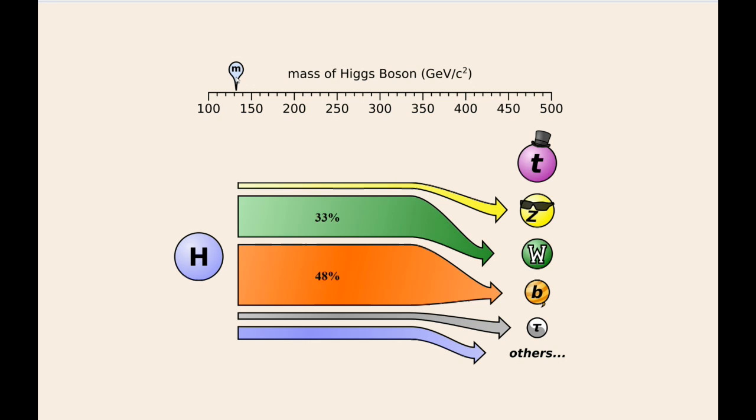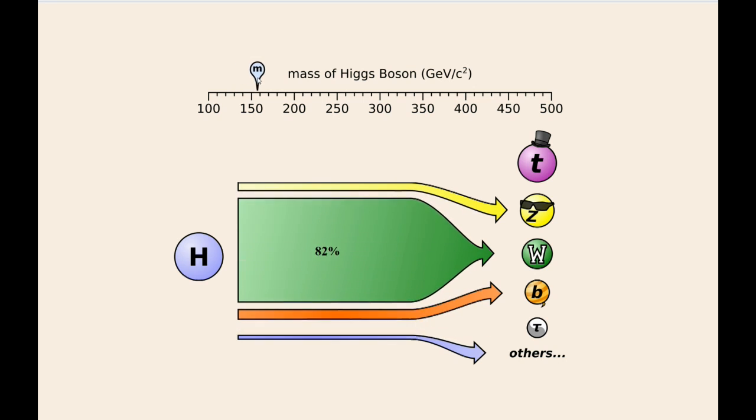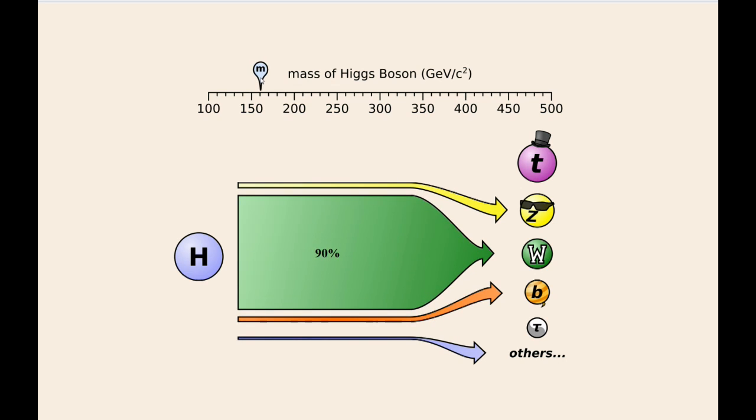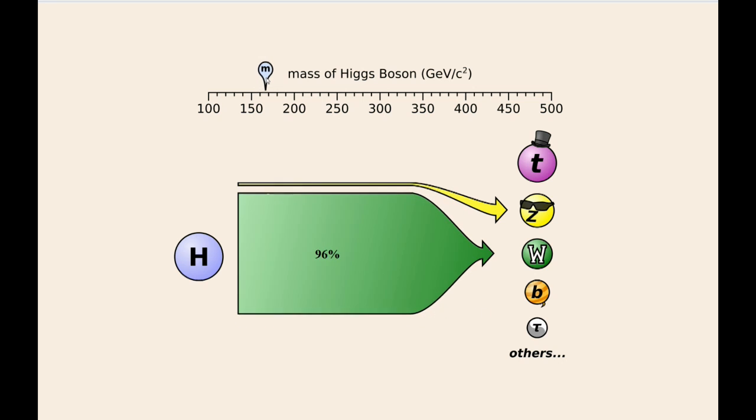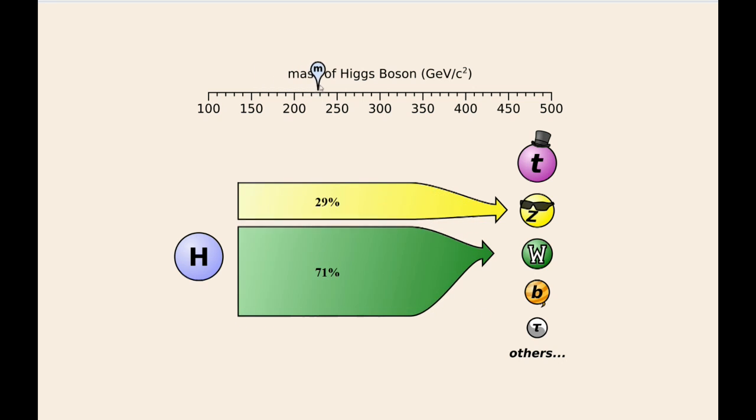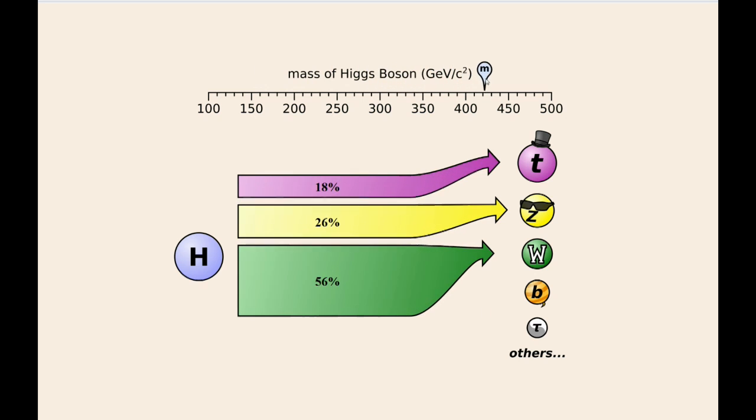As I raise the mass to about 160, we see that the Higgs boson will decay nearly entirely into W bosons. Above that mass, the ways in which the Higgs boson decays continues to change and eventually even includes a possible decay into top quarks.